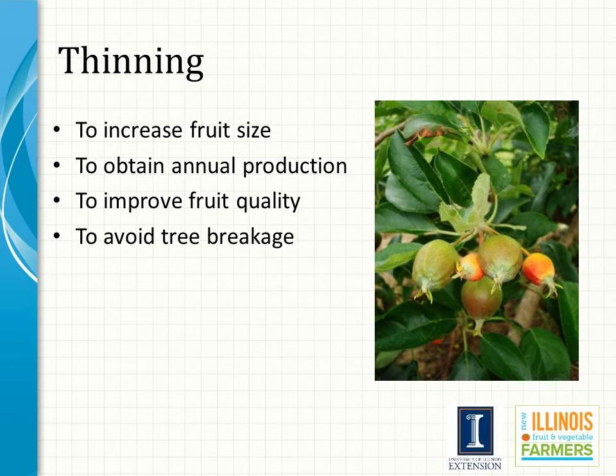Removing a portion of the crop results in increased size and quality for the remaining crop. The earlier the crop is thinned, the greater the increase in fruit size. For some crops, such as Golden Delicious apples, the tendency towards alternate bearing is very strong, and annual thinning is a method to reduce that cycle.